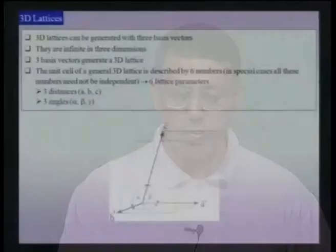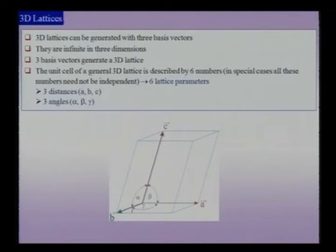It is now time to consider 3D lattices. So far we have dealt with one- and two-dimensional lattices. To generate a lattice in three dimensions, I need three non-coplanar vectors — A, B, and C. There are three angles: gamma (between A and B), beta, and alpha, which define a general parallelepiped in three dimensions. These lattices are infinite in three dimensions and we can choose a unit cell to describe them.